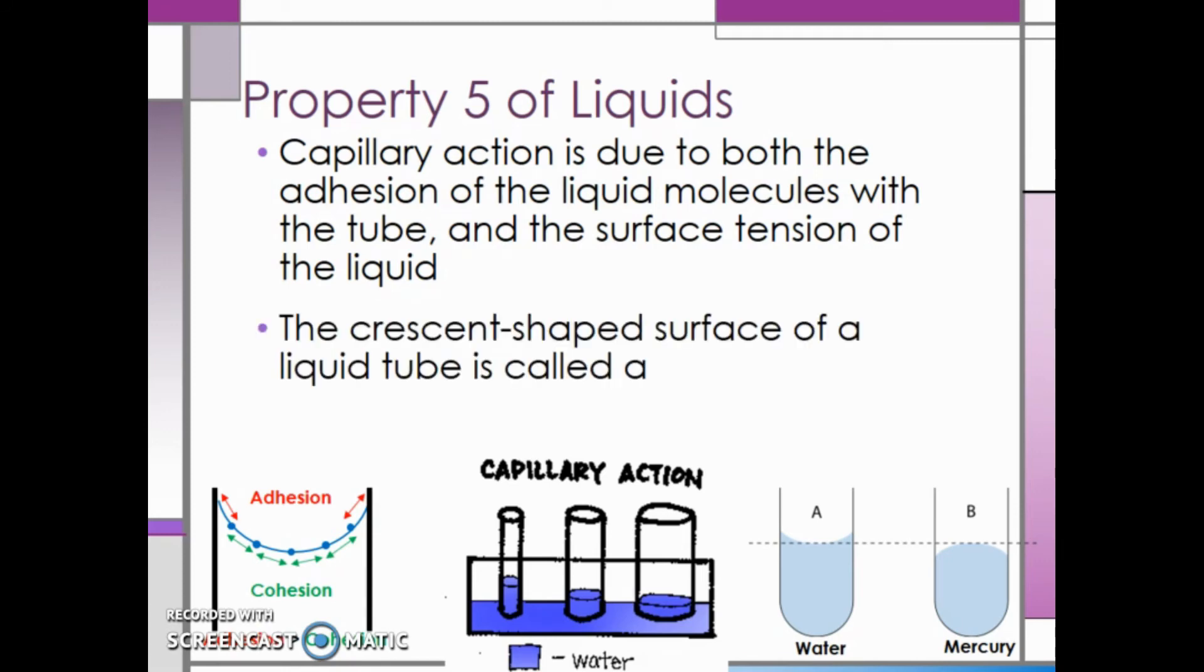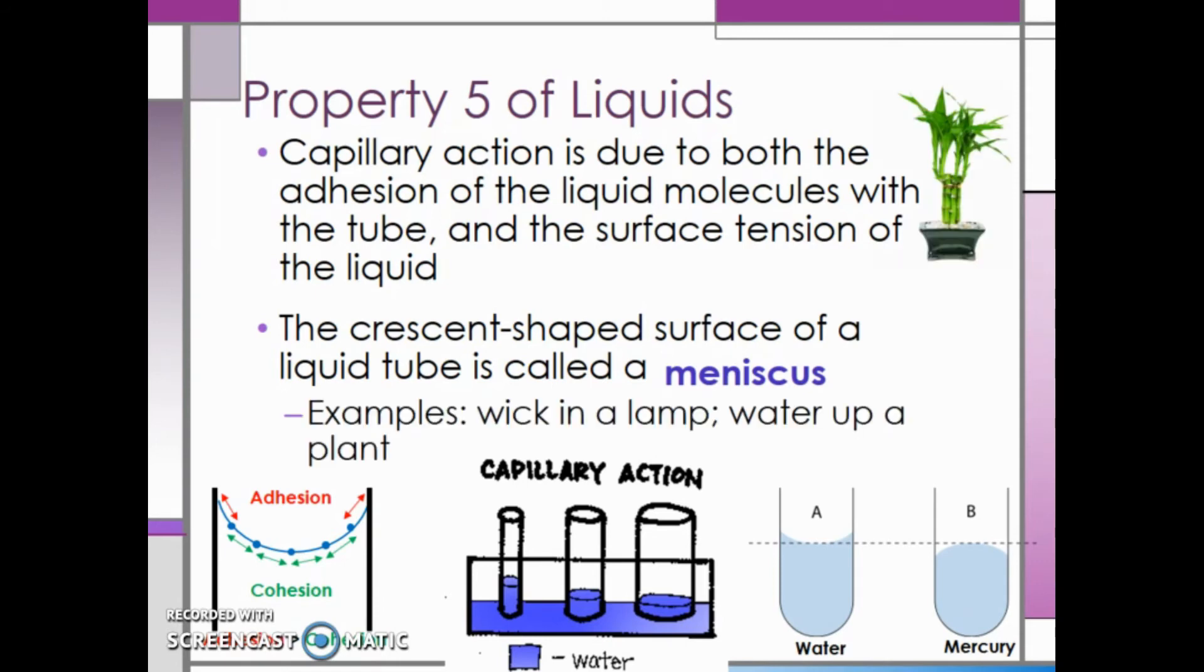The crescent-shaped surface of a liquid tube is called a meniscus. An example of capillary action would be the wick in an old lamp keeping the flame burning or water moving up a plant from its root system.